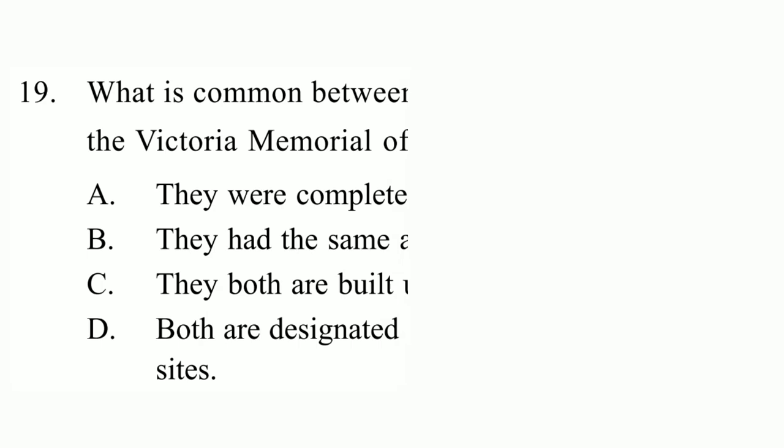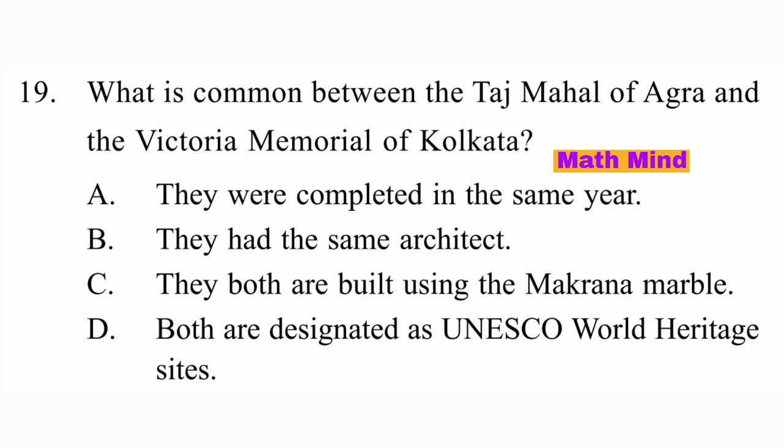Question No. 19. What is common between the Taj Mahal of Agra and the Victoria Memorial of Calcutta? Option C is correct: They are both built using Makrana marble.